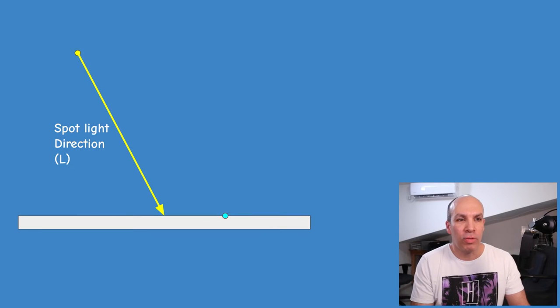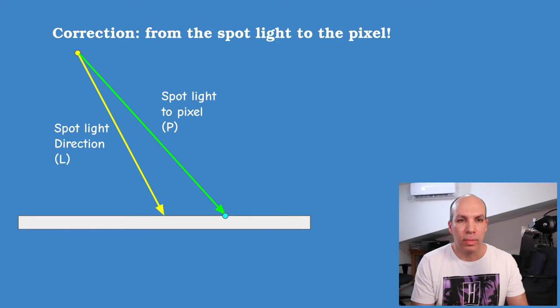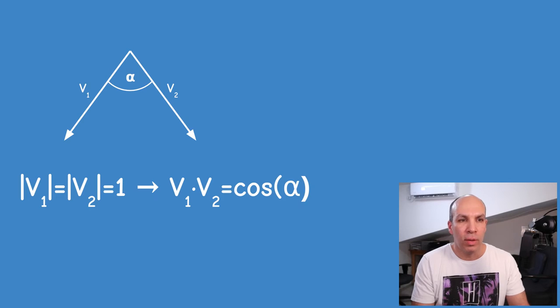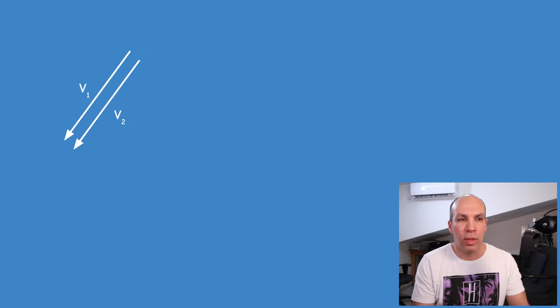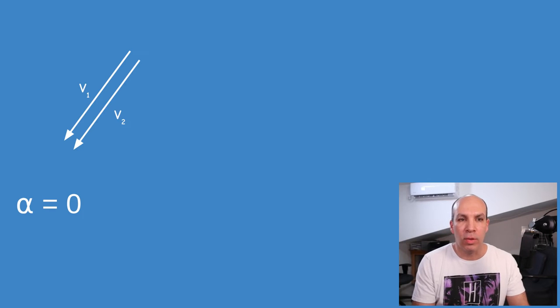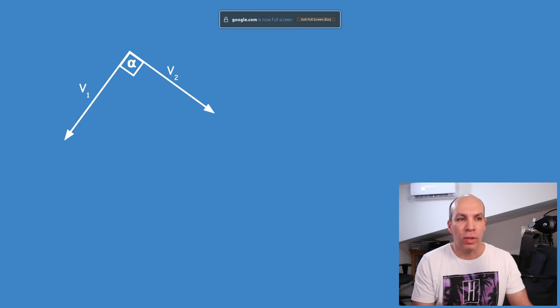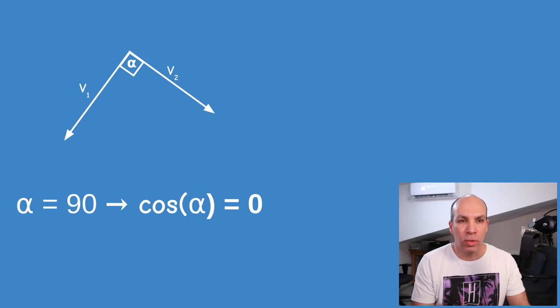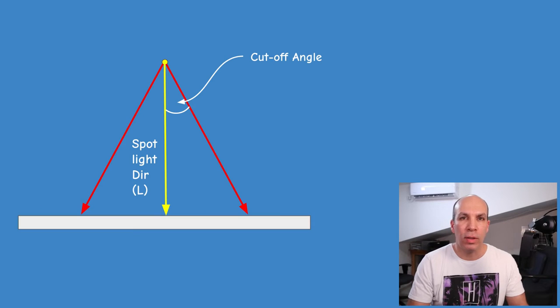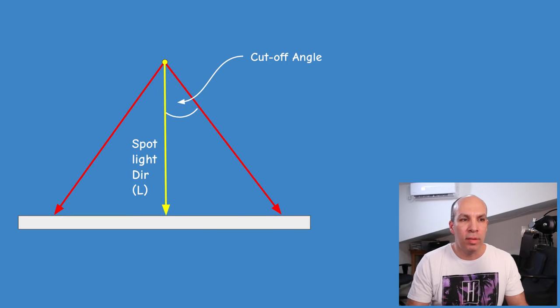Next up is the cutoff angle, and as usual the dot product is here to save the day. We have the direction vector of the spotlight and the vector that goes from the camera to the pixel. A dot product between two normalized vectors provides the cosine of the angle between them. When the two vectors point to the same direction, the angle is zero and the cosine is one. When the two vectors are perpendicular to each other, the angle is 90 and the cosine is zero.